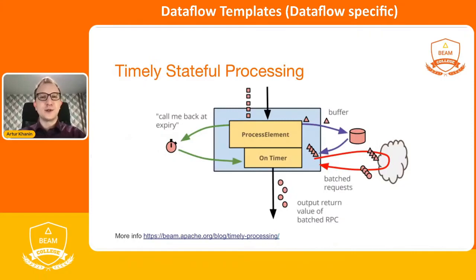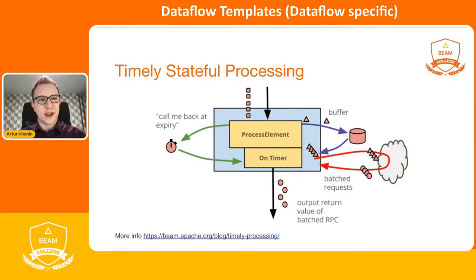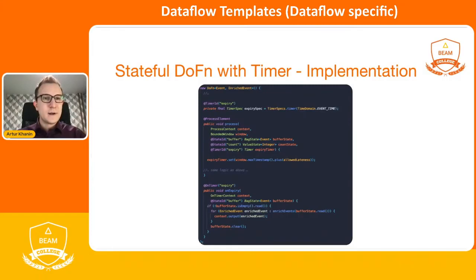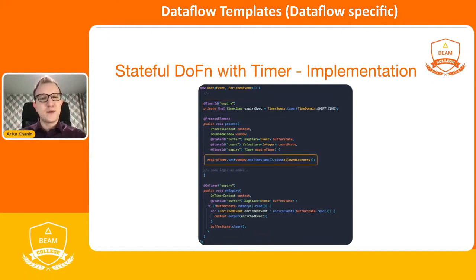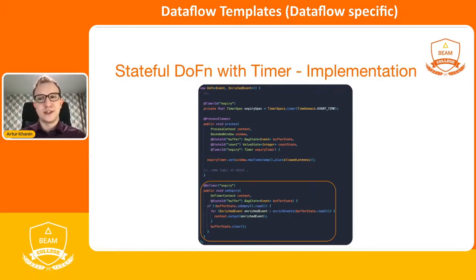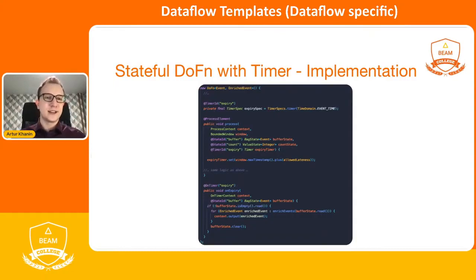We didn't stop at pure stateful DoFn — we also added a timer to it. We encountered a situation with streaming data where actual data may appear after a significant period of time. We didn't want the external service to idle. Now, whether the pipeline is streaming or batch, such construction handles both situations. An initial stateful DoFn can be simply extended with a timer. The declaration is almost the same using predefined timer specifications. We set the timer at the process function, and the final step is to add actions performed after timer expiration via a function with an on-timer annotation.